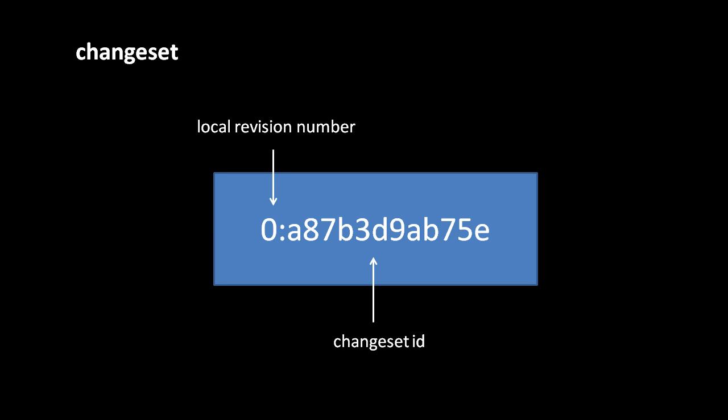The purpose of these change set IDs is that you have a unique identifier for each change set, which is unique across all repositories. So when this change set gets sent around to different repositories, it can reliably be uniquely identified. As a convenience, every change set in a repo is also known by a local revision number.